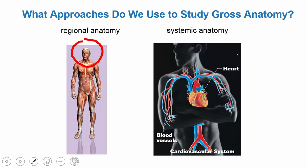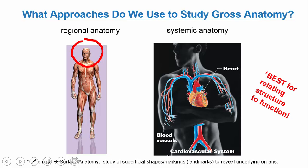What we're going to use in this course is systemic anatomy, where we cover one system at a time. For example, we might focus on the cardiovascular system — the heart and blood vessels pumping blood through the body. This approach is great for relating structure to function and is very well suited to an undergraduate-level introduction to anatomy.